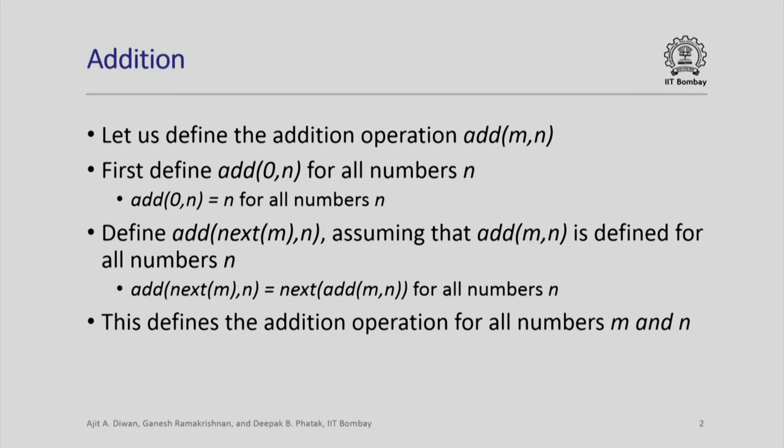Now, what is add(next(m), n)? We define that assuming that add(m, n) is defined for all numbers n. This is easy to see: add(next(m), n) is next applied to add(m, n), for all numbers n. Informally, we know that next(m) is m plus 1, so adding m plus 1 to n is like adding m to n and then adding 1 to that. The formal specification is: add(next(m), n) = next(add(m, n)) for any number n.